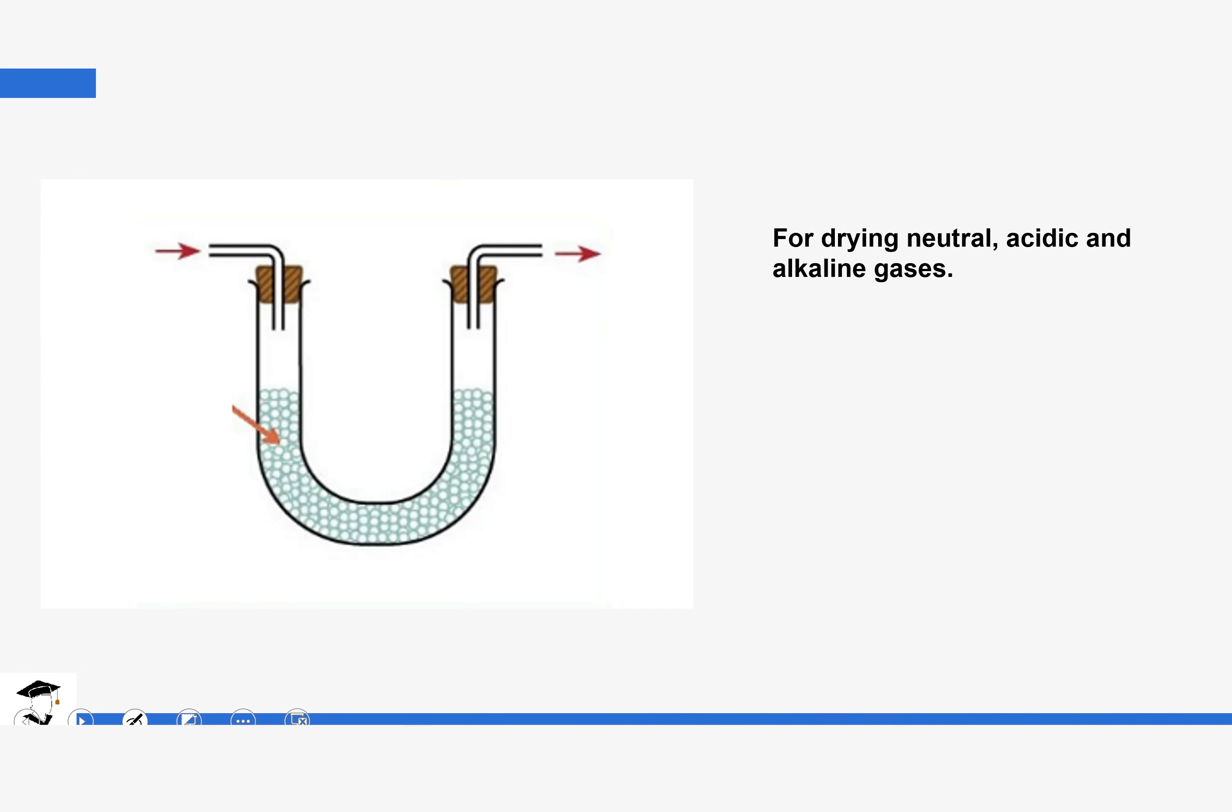And then the next method is anhydrous calcium chloride. It's usually put in a U-tube. This is called a U-tube. So since it is in solid state, it is put in the U-tube and you can see the tubes coming in with the gas. The gases pass through the anhydrous calcium chloride. So by the time it gets into this other end, it is already dry. It is usually used for drying neutral gases. It can be used to dry acidic gases and some alkaline gases with some, a few exceptions, which we are going to discuss later on in Form 3.